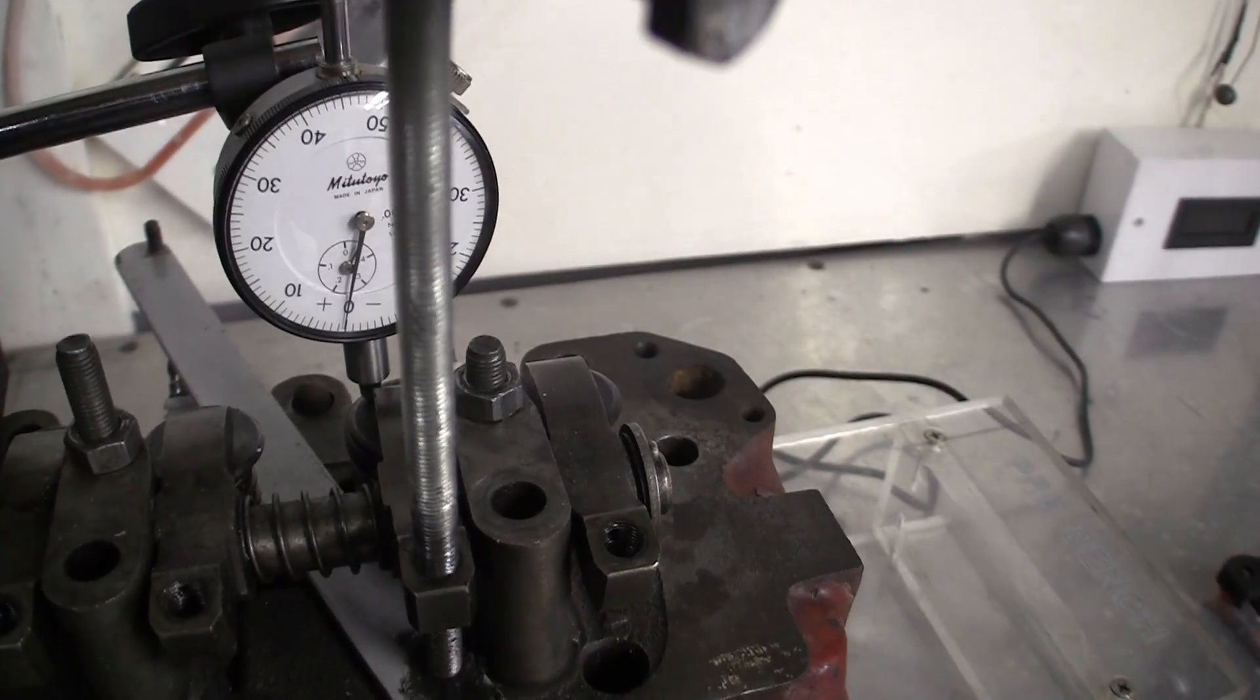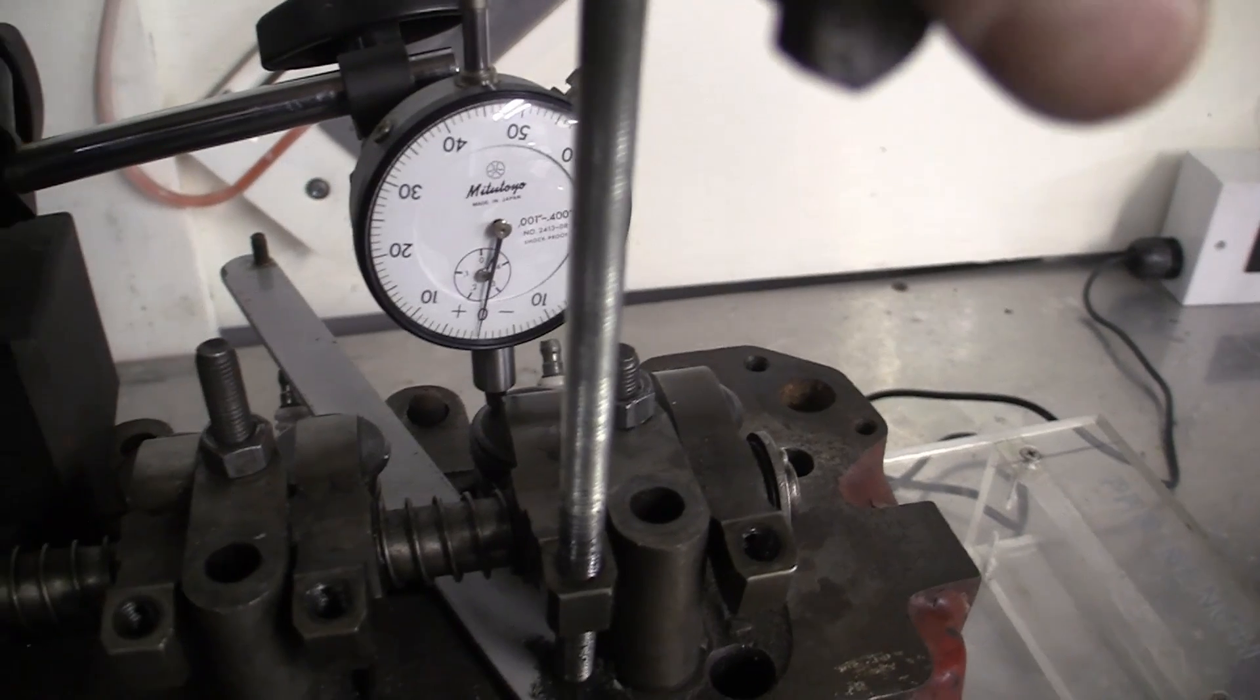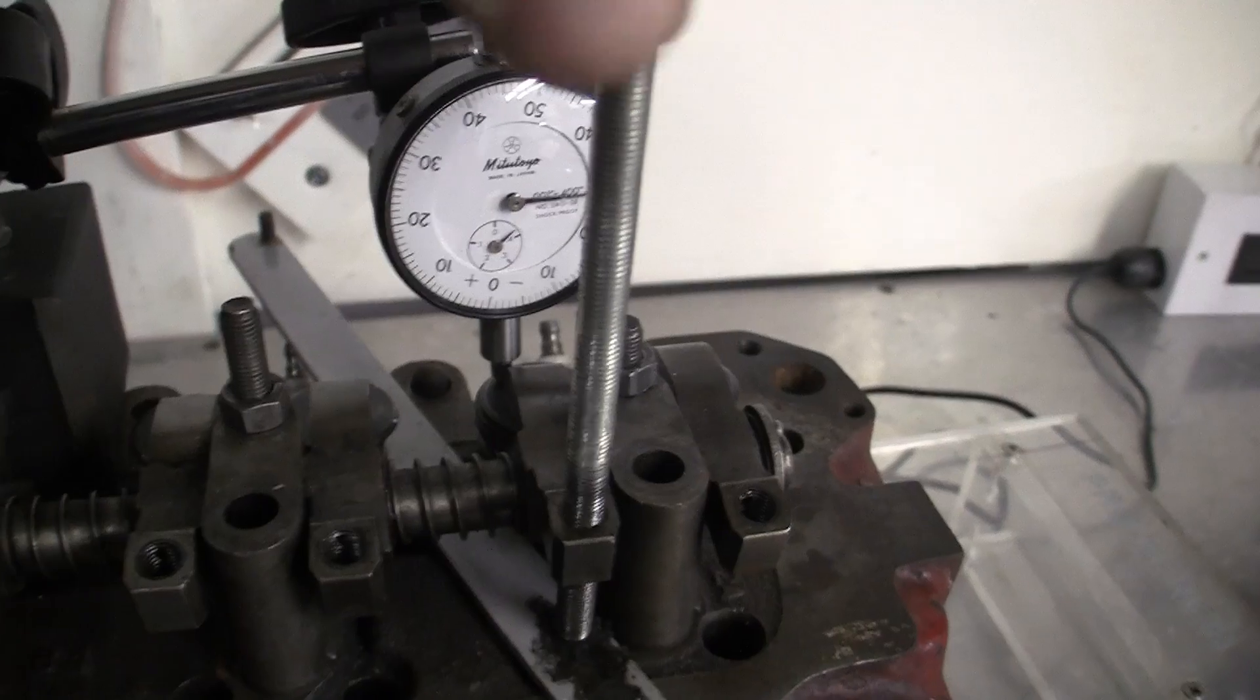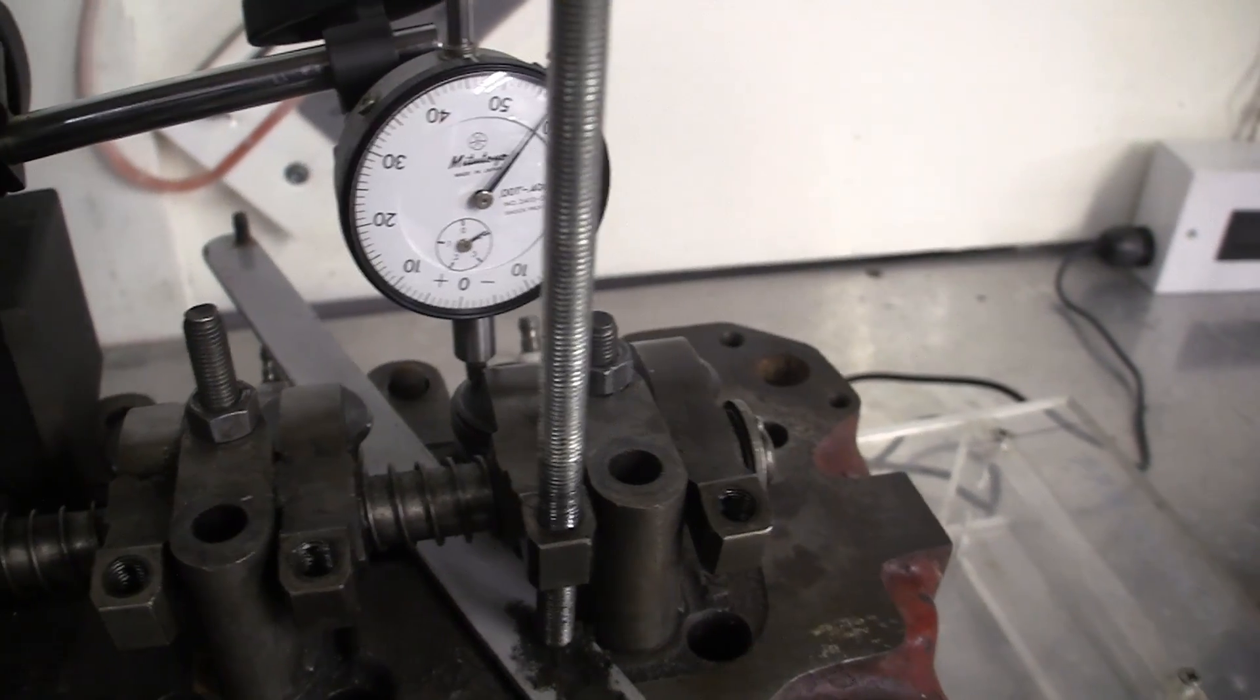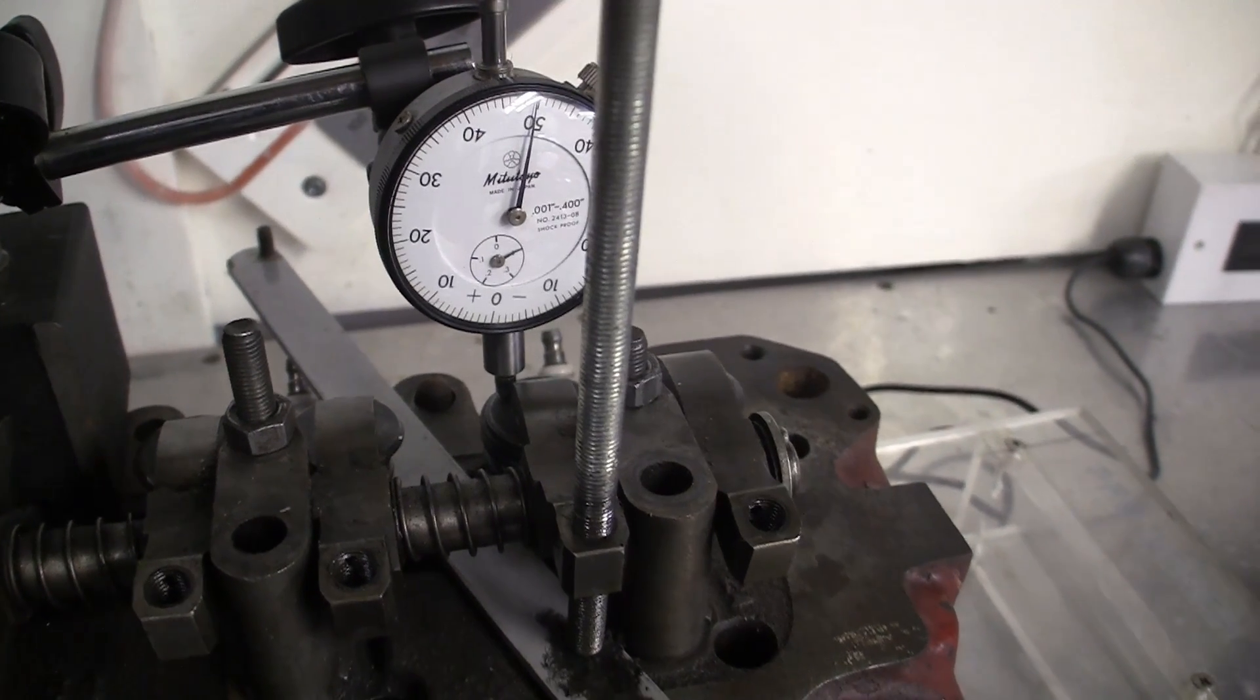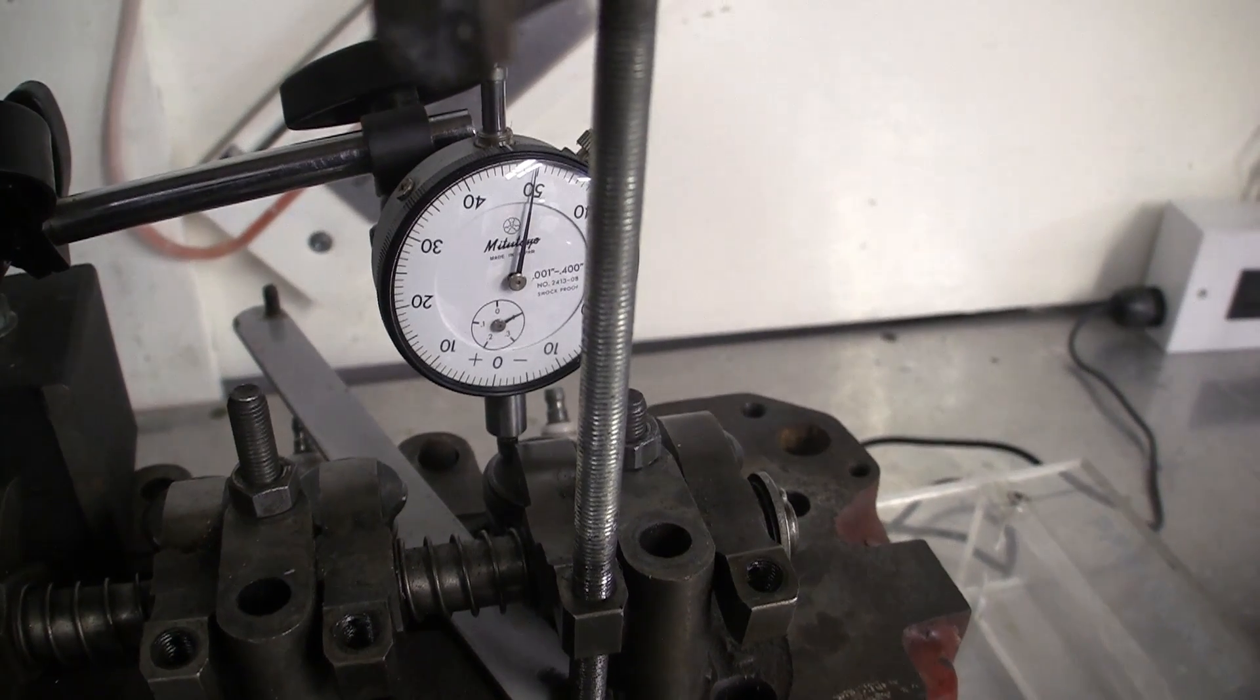So when you wind this in, it winds the rocker down, and if you watch the DTI gauge, it starts to go up. So you wind that round—I usually test in 50 thou increments. So that was with the valve closed, I've now wound that round, we've now got 50 thou lift on the inlet valve.